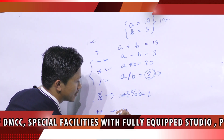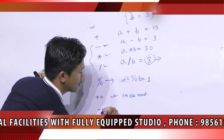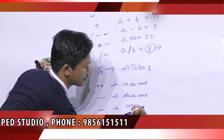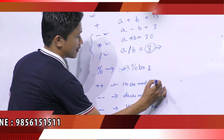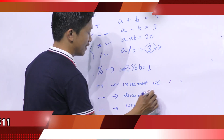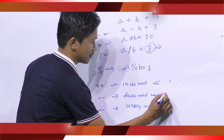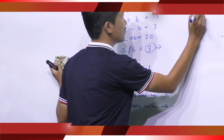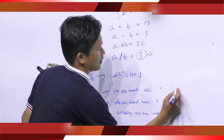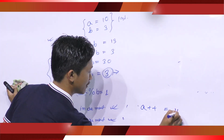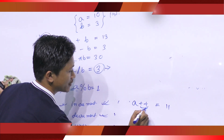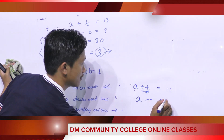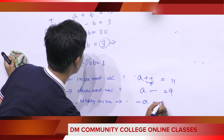This is known as the increment operator, and this is known as the decrement operator, and this is known as unary minus. The increment operator increases the value of an integer by 1, and the decrement operator decreases the value of an integer by 1. For example, if A is 10, then A++ is equal to 11, A-- will be equal to 9, and minus A will be equal to minus 10.